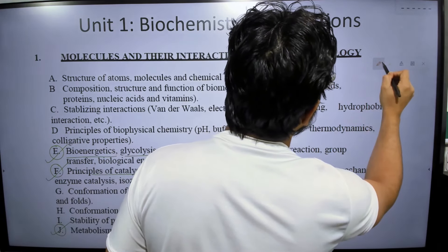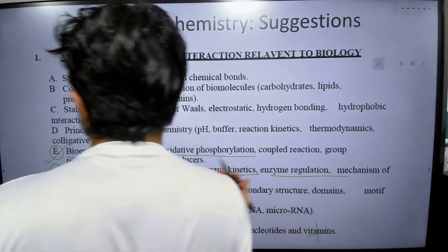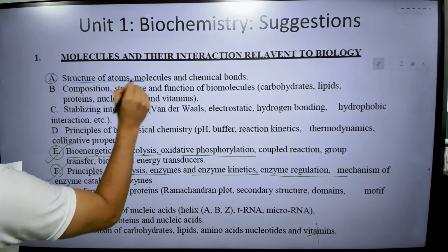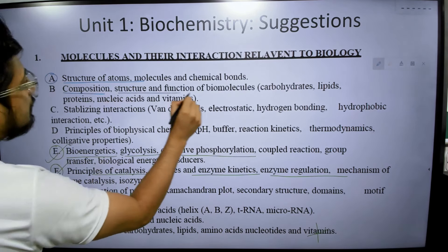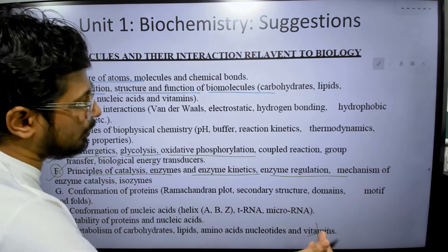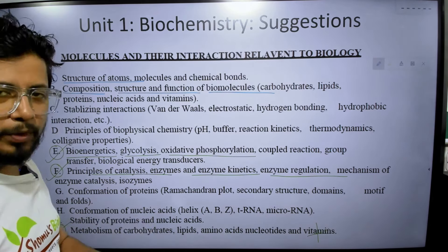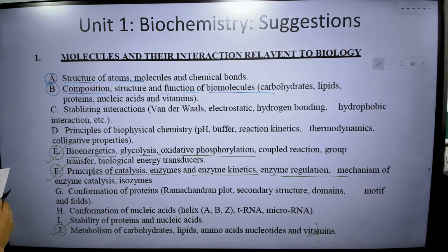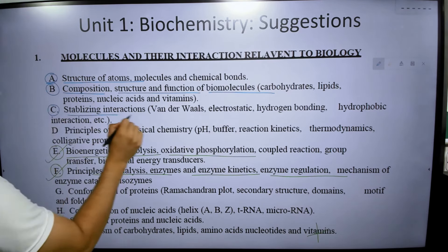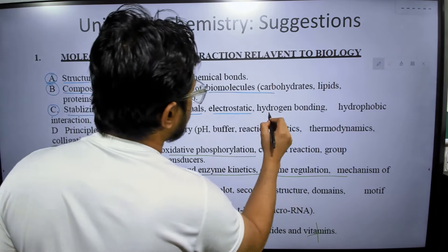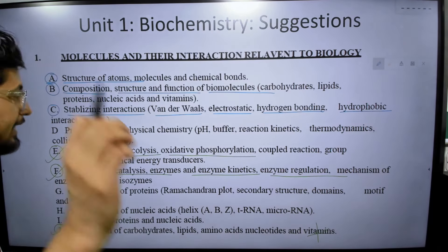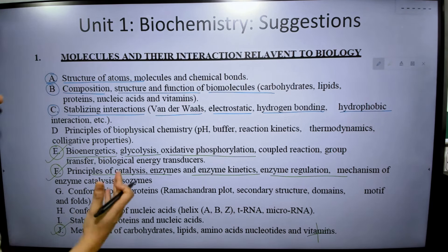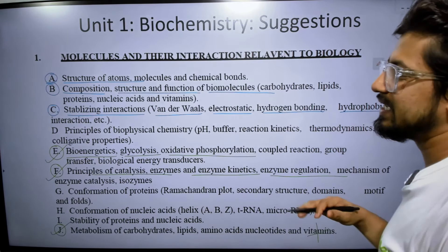Apart from that, the secondary topics that carry moderate importance — these will be in blue color. First is structure of atoms. Another is composition, structure, and function of biomolecules: what carbohydrates look like, what the components are — monosaccharides, disaccharides, polysaccharides, lipids, proteins. And also stabilizing interactions — intermolecular interactions such as van der Waals, electrostatic, hydrogen bonding, and hydrophobic interactions. These three topics fall in the moderately important segment.